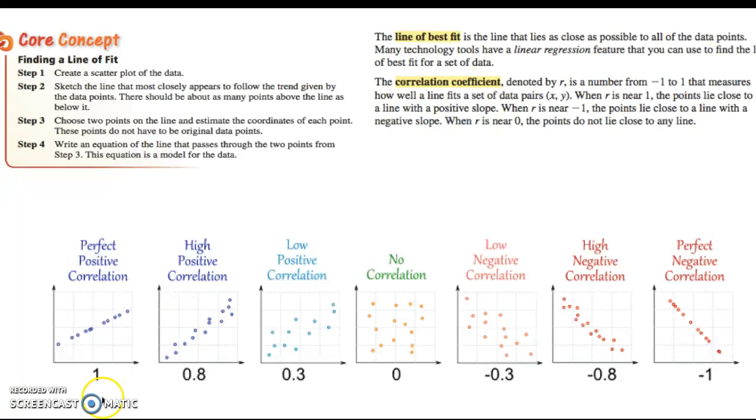When you have r values around 1 or negative 1, we say that is a strong positive or strong negative correlation. When you have values around 0.8 to 1 and negative 0.8 to negative 1, we would also call that a strong positive or strong negative correlation.